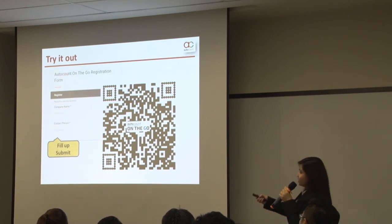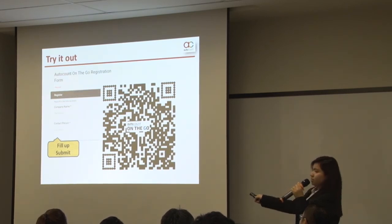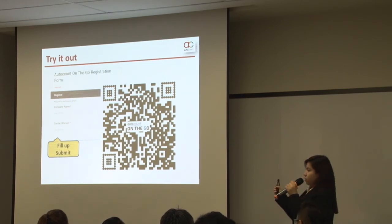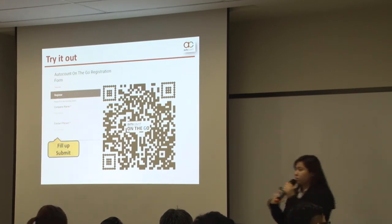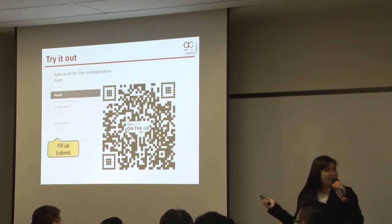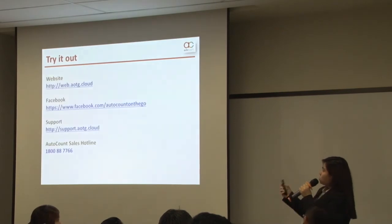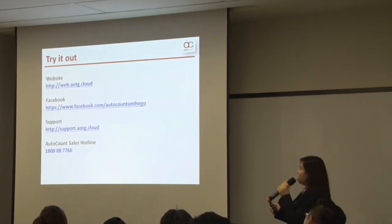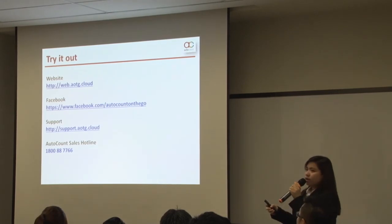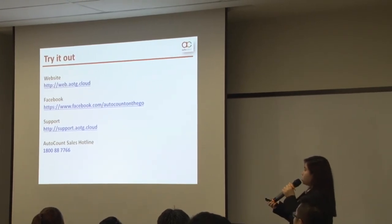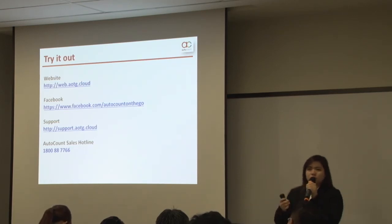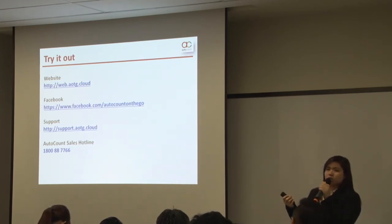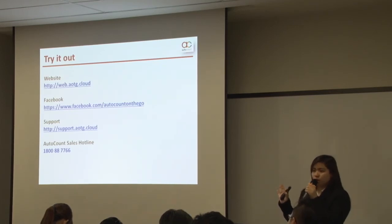You can also use the QR code to scan and access the registration. For further information, you can go to the AutoCount On The Go website and also the Facebook page. If you want to know more about the features and installation setup wizard, you can get that from the AOTG support website.